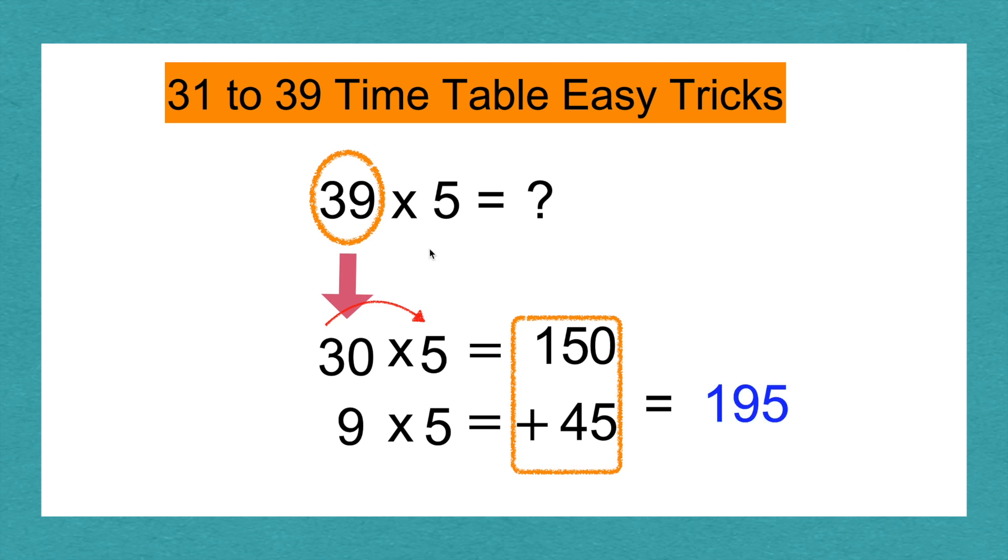150 plus 45 equals 195. 195 is the answer. And 39 times 5 equals 195.